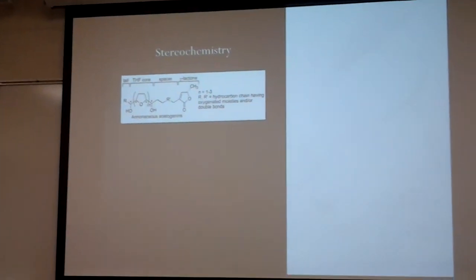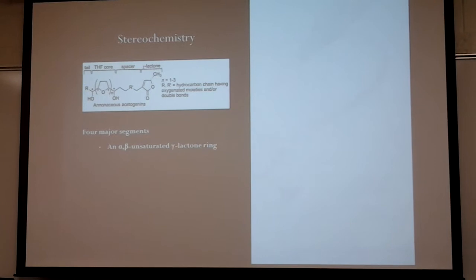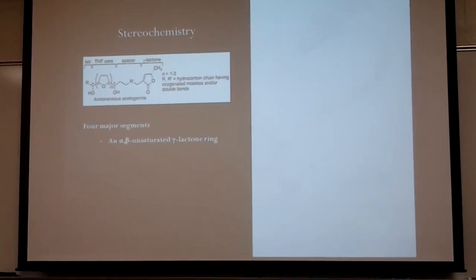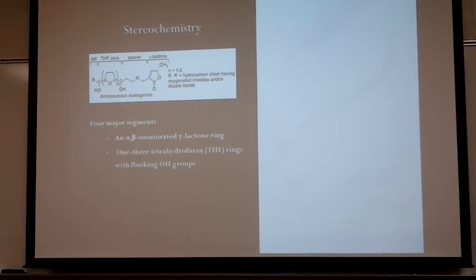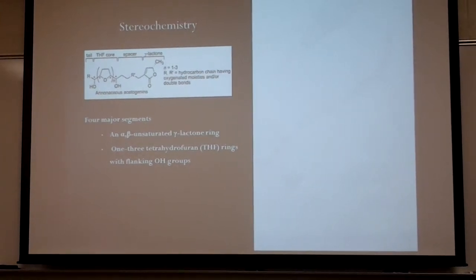The stereochemistry of the acetogenins consists of four major factors. Those four factors are an alpha-beta unsaturated gamma-lactone ring, one to three tetrahydrofuran or THF rings.